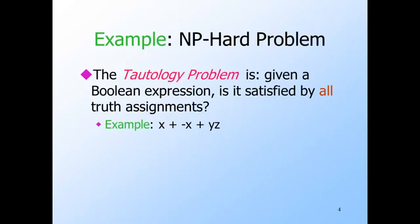A Boolean expression is a tautology if it is true for every truth assignment. For example, this expression is a tautology. Every truth assignment makes X either true or false, so one of the first two terms will have to be true, and therefore the whole expression is true. We don't even need the term Y and Z. If you look at Cook's original paper on NP-completeness, he was really trying to argue that tautologies required exponential time to recognize.